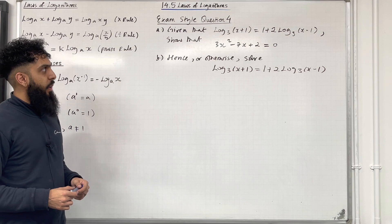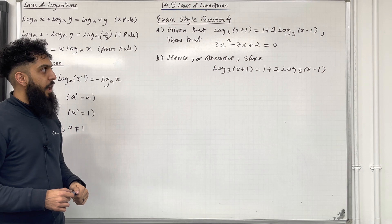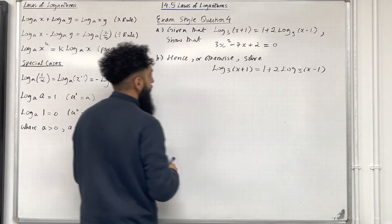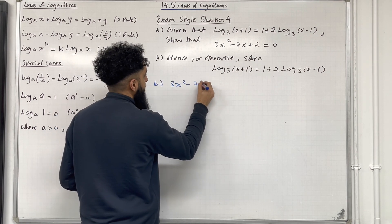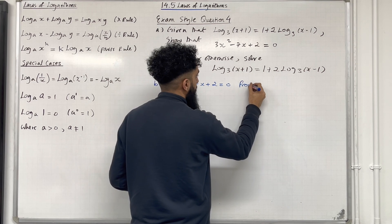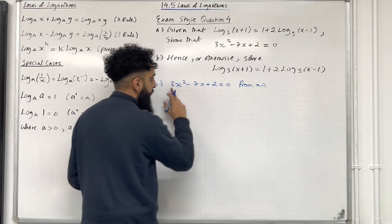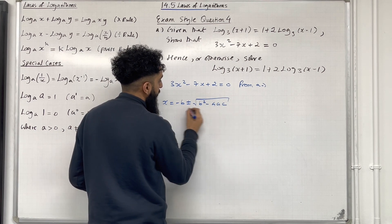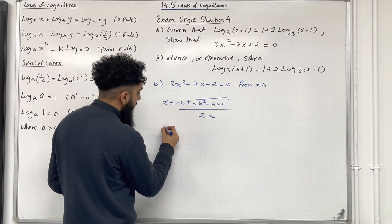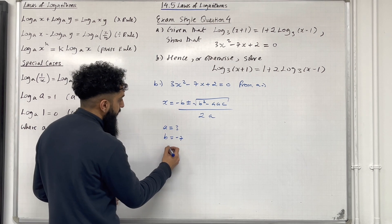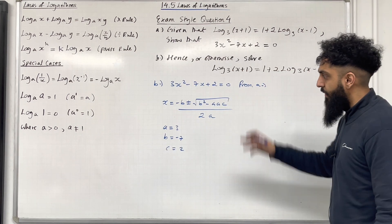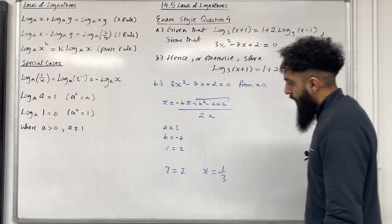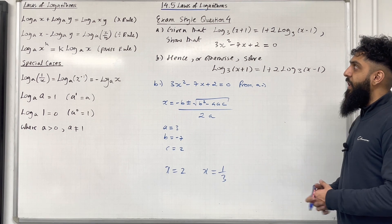Let's have a look at part B of exam style question 4. Hence, or otherwise, solve log base 3 of (x plus 1) equal 1 plus 2 log base 3 of (x minus 1). From part A we have shown this equation is the same as 3x squared minus 7x plus 2 equal 0. Using the quadratic formula x equal (minus b plus or minus square root of b squared minus 4ac) over 2a, with a equal 3, b equal minus 7 and c equal 2, substituting gives two roots: x equal 2 and x equal 1 third. These are the solutions to this particular logarithmic equation. This completes exam style question 4.